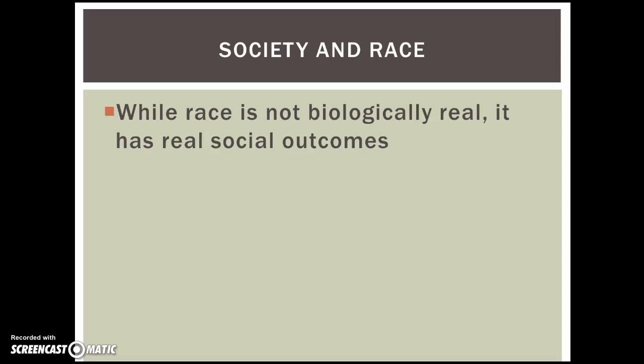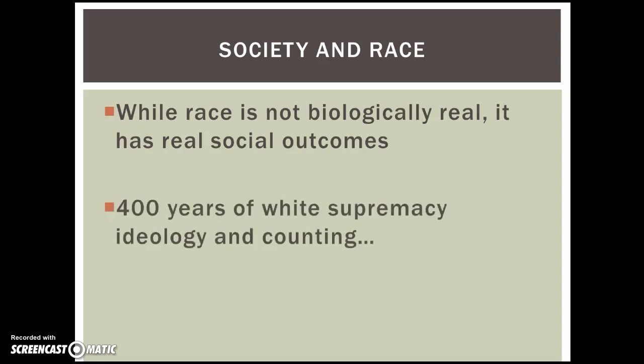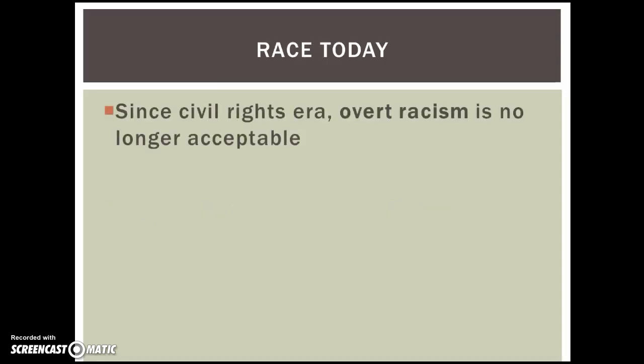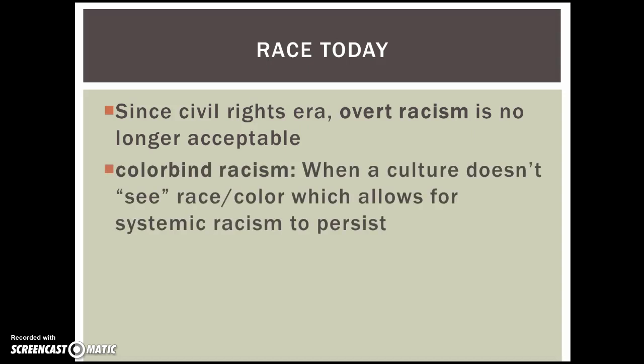When we think about society and race today, we know that race is not biologically real, but obviously it still has real social outcomes. We are living in 400 years of white supremacy ideology and still counting. Jim Crow legally ended in the 1960s, but we live in a new Jim Crow era where overt racism is no longer acceptable, but subtle forms of racism are still very much practiced. One of these types of racism is colorblind racism, where a person pretends that race no longer exists. This is actually the popular way to teach children about race — that race no longer matters, that we should treat people not based on their skin color but on the content of their character, as Martin Luther King philosophized.